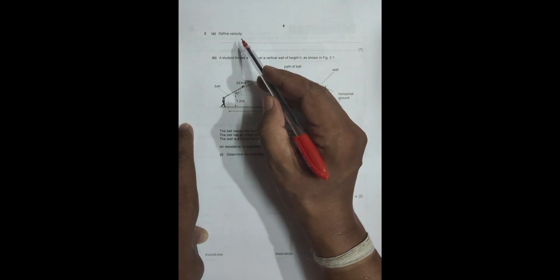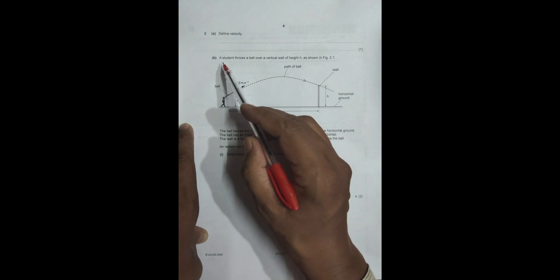Hello folks, this is a 2024 May June paper 2, question number 2. It is concerned with the chapter kinematics, specifically projectile motion. It says velocity, so it is the rate of change of displacement. Let's go to the main problem. A student throws a ball over a vertical wall of height h, as shown in figure 2.1.